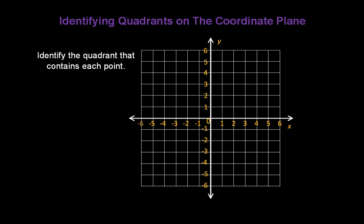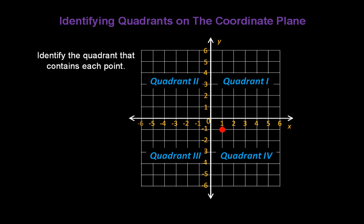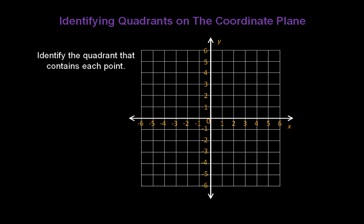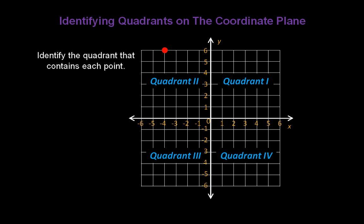Let's identify the quadrant that contains each point. Take a look for the red dot on your screen. What quadrant is that point located in? That's quadrant 4. Let's try another one. How about this point? What quadrant is that point located in? It's quadrant 2.